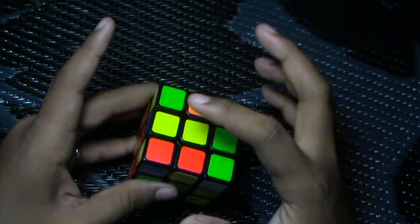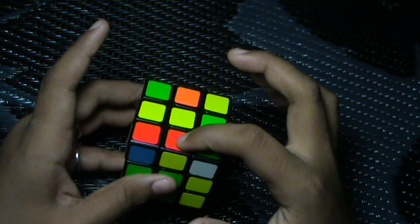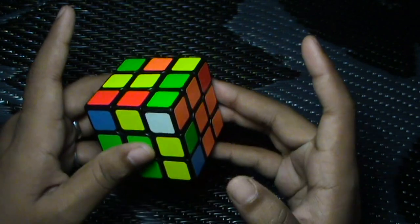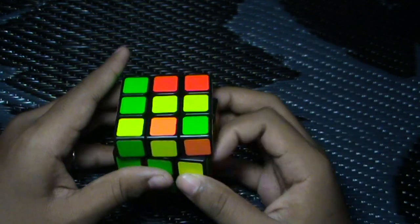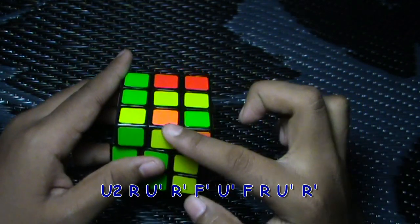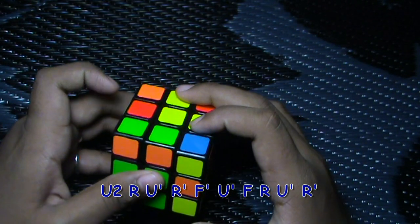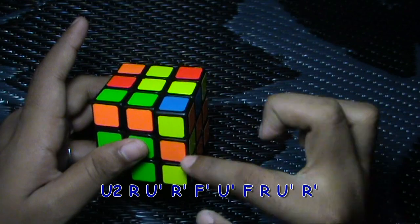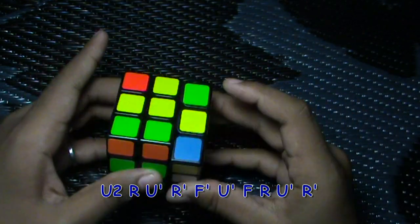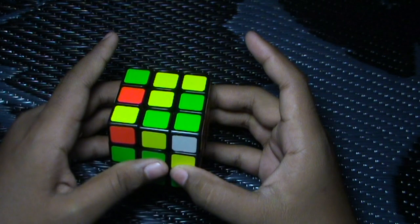Next is again when one of the edges is there and instead of this, now the edge is there. So what you do in here you do a U2, then I will swap these two edges so R U prime R prime. Now I have swapped these two and next I swap these two so I do an F prime U prime F, R U prime R prime.